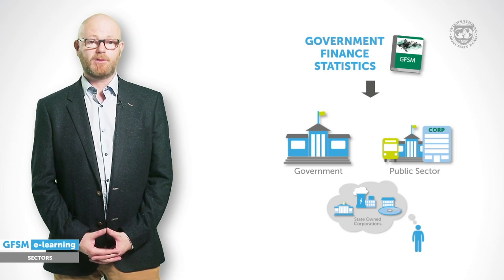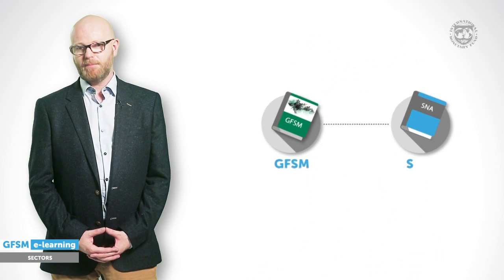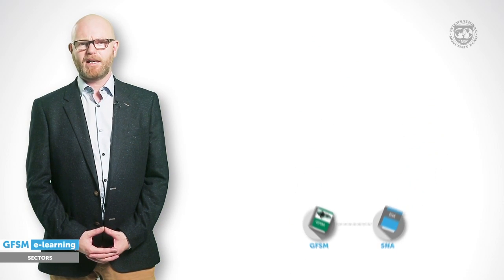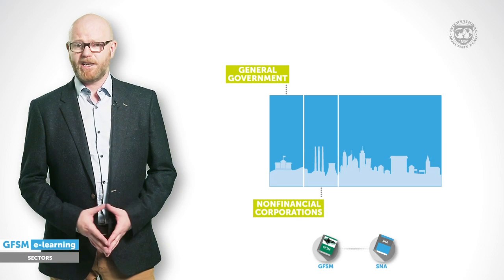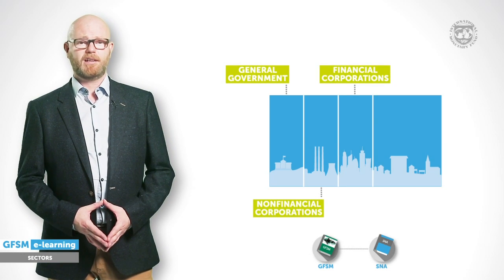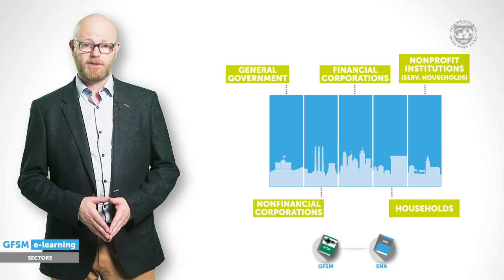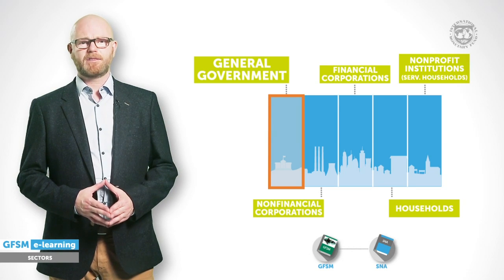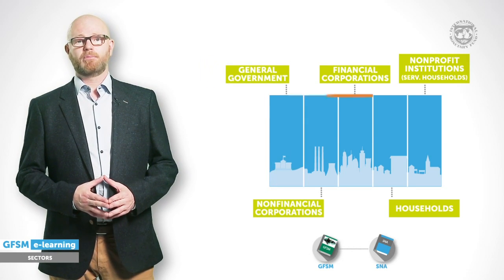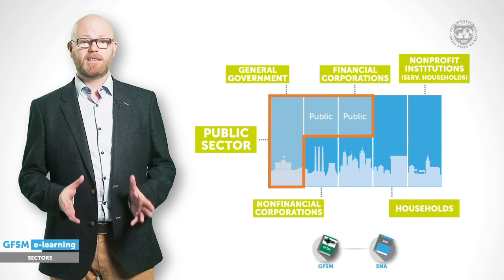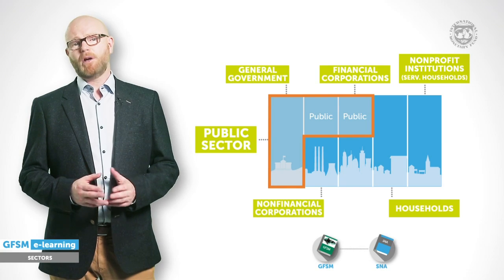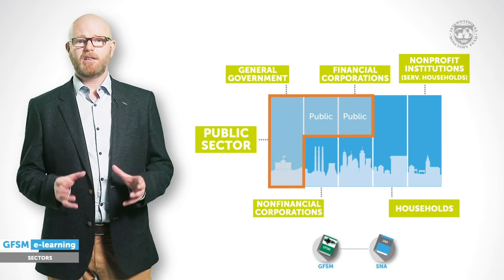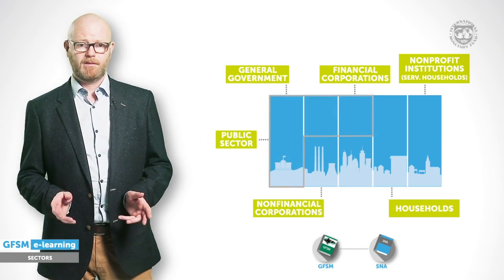GFSM builds on the standard statistical concepts set out in the System of National Accounts. In macroeconomic statistics, the resident economy is divided into five sectors: the general government sector, non-financial corporation sector, the financial corporation sector, the household sector, and the non-profit institutions serving household sector. The general government sector is particularly relevant for fiscal and macroeconomic analysis. In addition, the broader concept of the public sector is relevant to assess the full extent of government activities and associated risks. The public sector is a hybrid of the general government sector plus the public non-financial and financial corporations controlled by the government. To understand how the five main sectors and sub-sectors are delineated, let's see what types of entities are covered and what the main economic activities of each sector are.